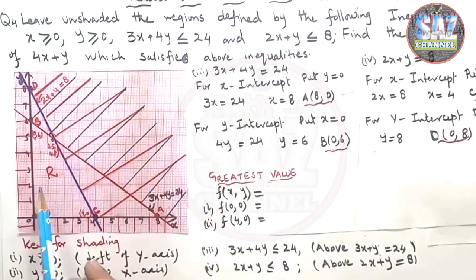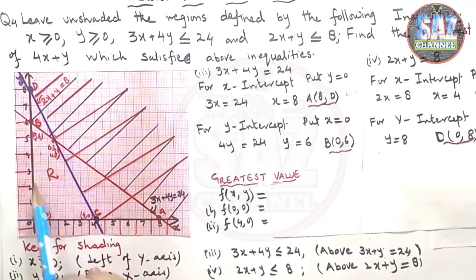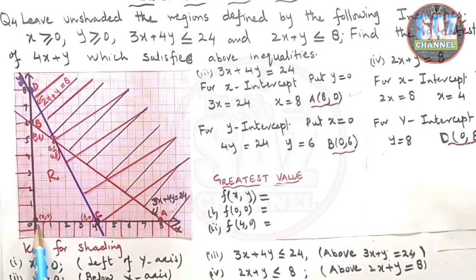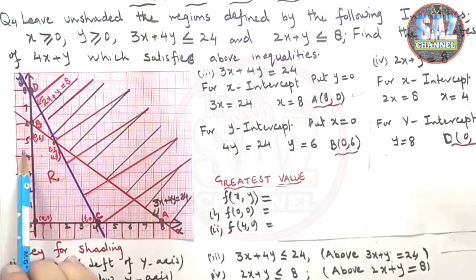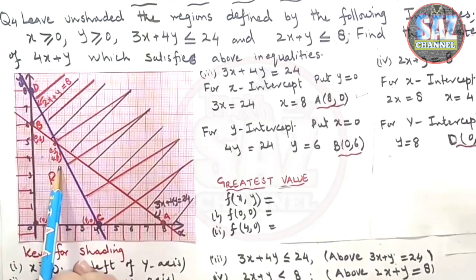Now if we look at the graph, this is the region, this is the area which is not shaded by all of the inequalities. This is our required region and these are the vertices: (0, 0), (4, 0), (0, 6) and approximately (1.5, 4.8) are the vertices.